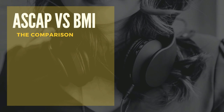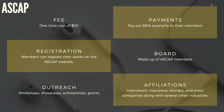Now it's time for the ASCAP versus BMI comparison. ASCAP is smaller than BMI, which may or may not matter to you. Starting with fees, ASCAP has a one-time fee of $50 when you first sign up, and then you're good for the life of your membership. For payments, ASCAP will pay you out quarterly at 88% of what they bring in from your royalties, keeping 12%. For registration, you can go onto their website and register your own works — it's a pretty simple process.